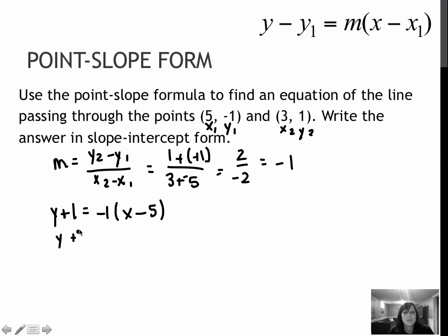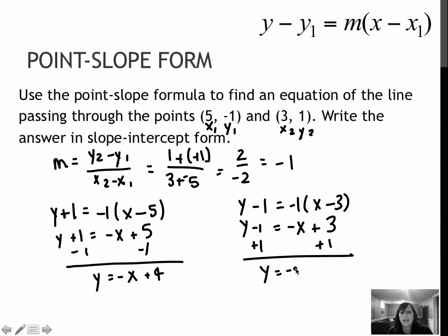If I then distribute, I get negative 1x and then plus 5. And then I would subtract 1 to get y equals negative x or negative 1x plus 4. Let's say distribute negative 1 times x, negative 1 times minus 3 gives me plus 3. And I would add one to each side. And notice my answer is exactly the same as it was if I chose my first point. So when you're doing point slope form, you only have to choose one of the two points to plug in. This one, I did both points just to show you that it would arrive at the same answer either way.